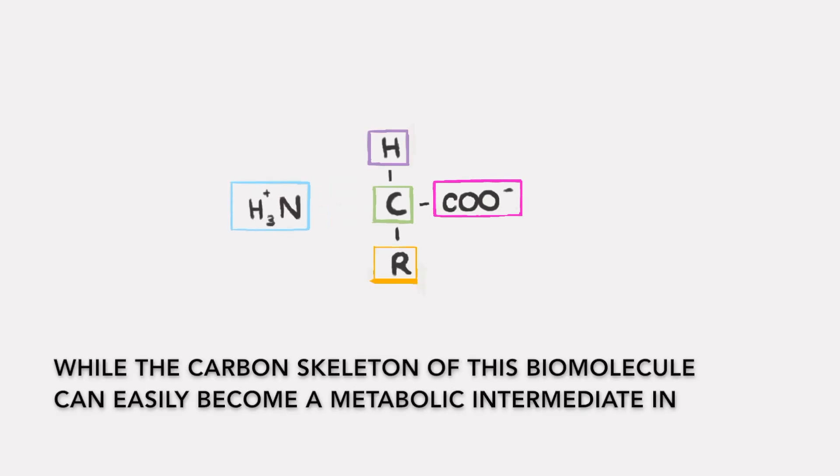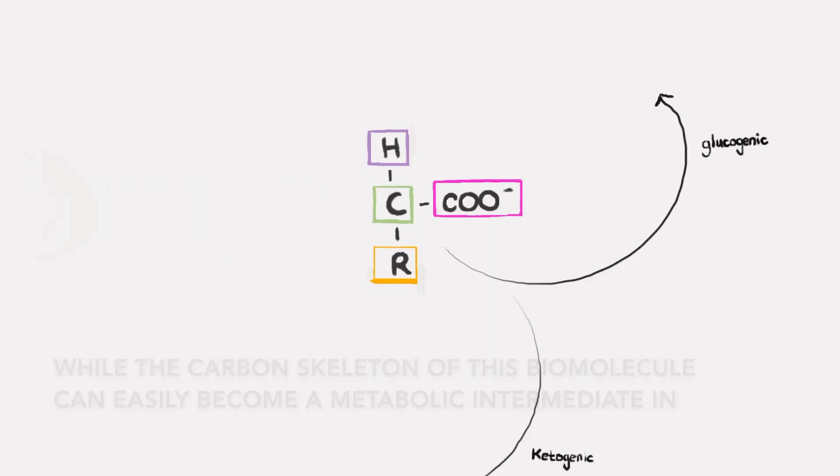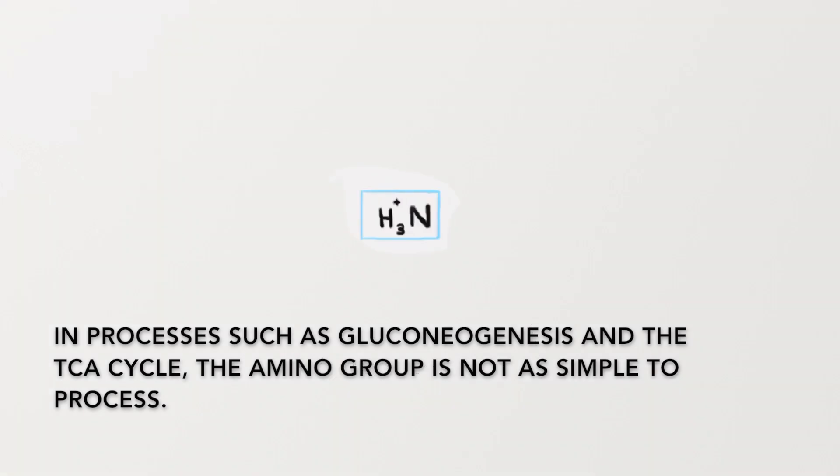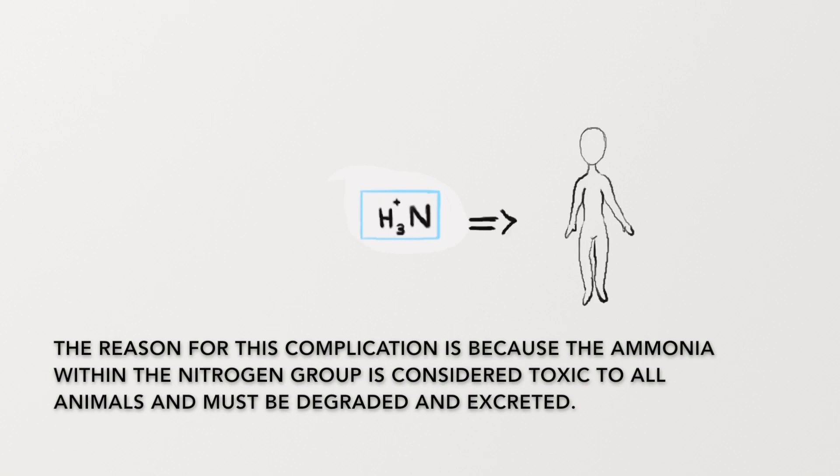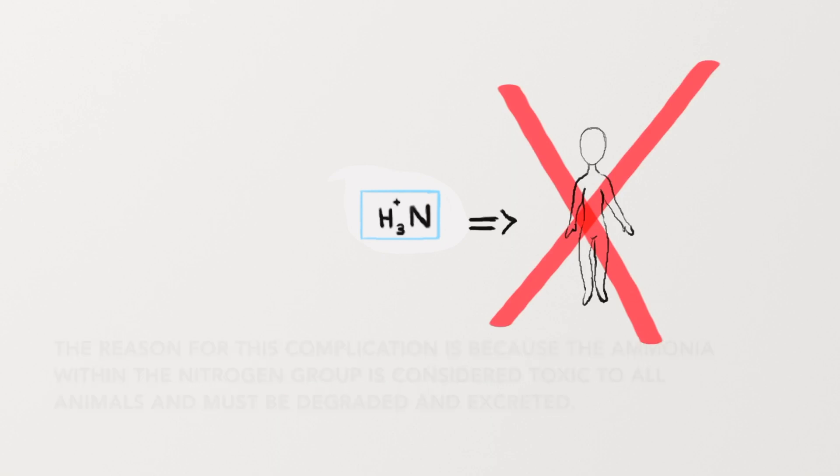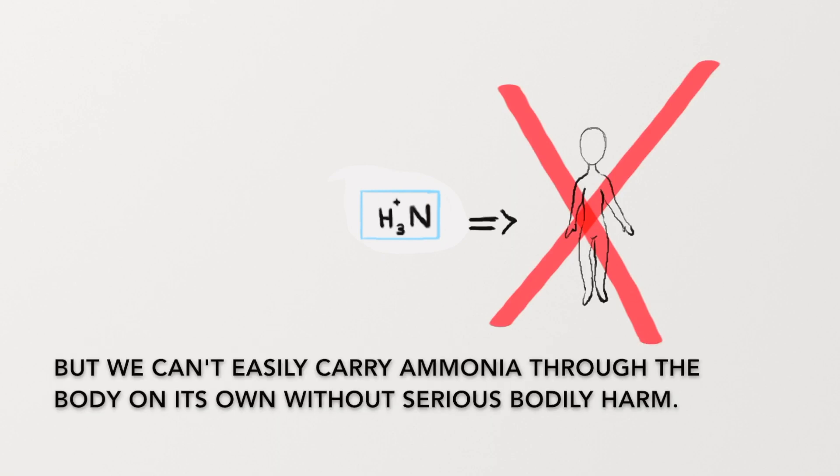While the carbon skeleton of this biomolecule can easily become a metabolic intermediate in processes such as gluconeogenesis and the TCA cycle, the amino group is not as simple to process. The reason for this complication is because the ammonia within the nitrogen group is considered toxic to all animals and must be degraded and excreted, but we can't easily carry ammonia through the body on its own without serious bodily harm.